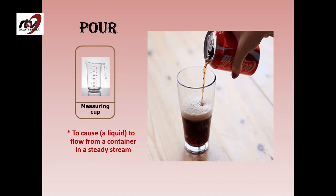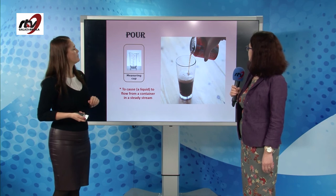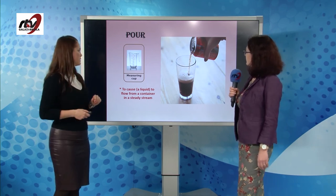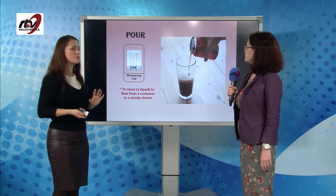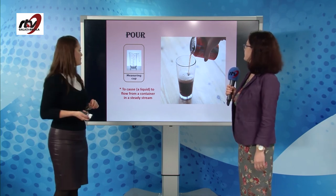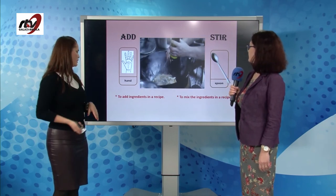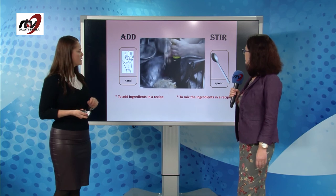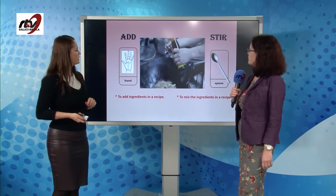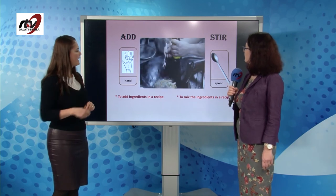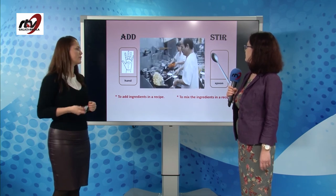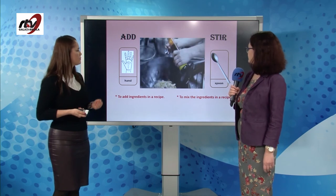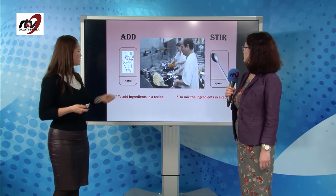Pour: to cause liquid to flow from a container in a steady stream — from a can, you pour into a glass. When we cook, we need a measuring cup, because sometimes it's really important to have a successful recipe. Add: to add ingredients in a recipe. He adds some soy sauce with a spoon. And we mix, we stir the ingredients in the recipe using a spoon, a wooden spoon, or just using the hand.